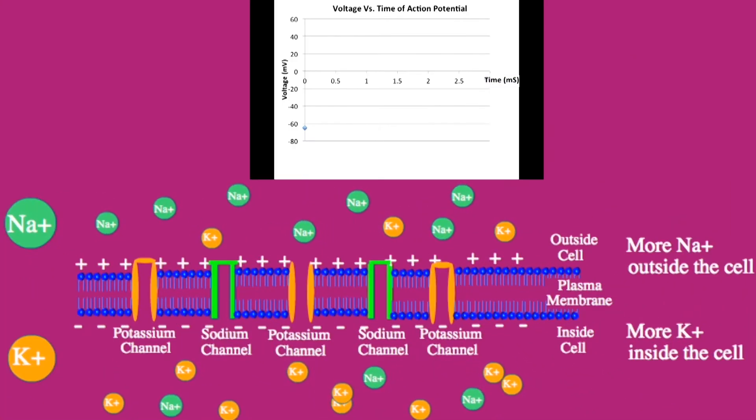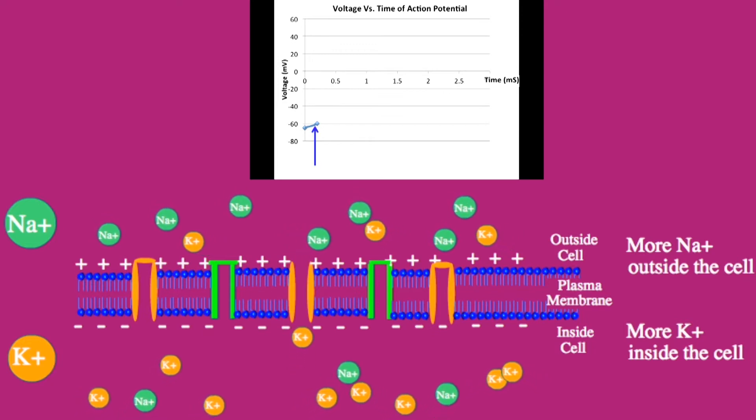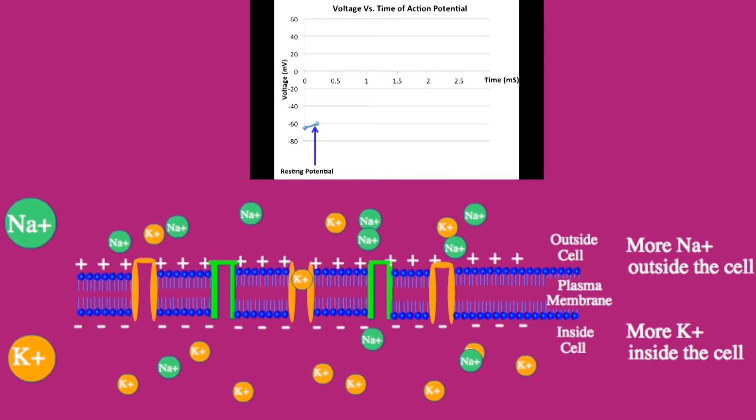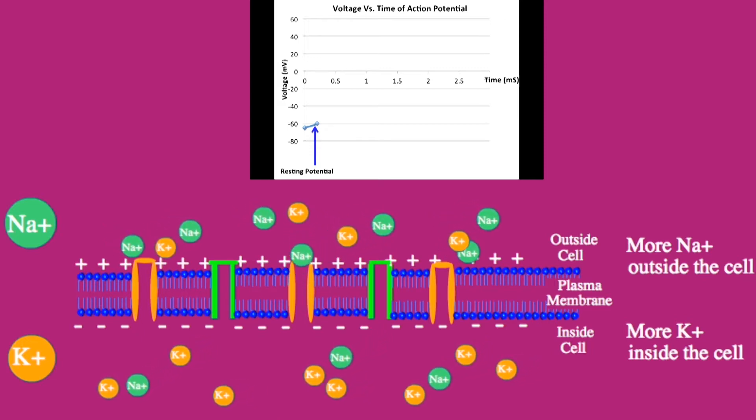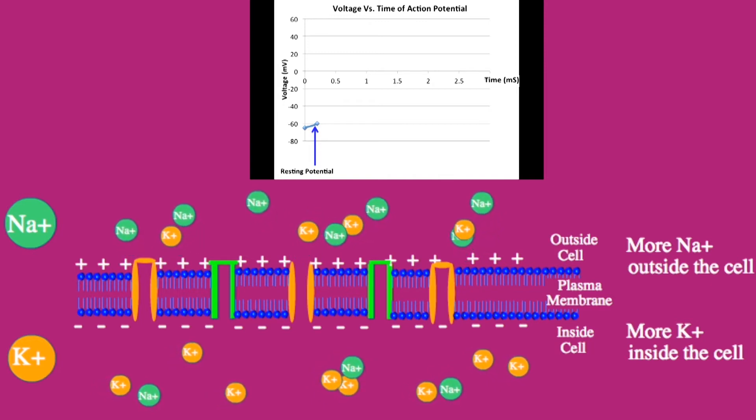Resting potential. When the cell membrane is at its resting potential, a small amount of potassium ions are leaking out of the cell due to a small resting permeability to potassium. No sodium ions are entering the cell because there is no permeability to sodium. Therefore resting potential is close to the equilibrium potential of potassium which is close to negative 80 millivolts.